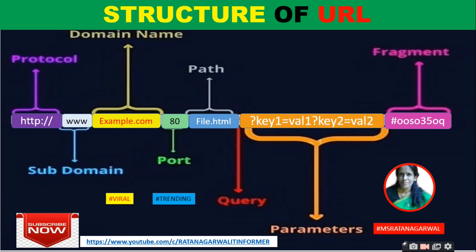www.domain — domain name means if you have a server space for your website. For the domain name, you have to reserve and purchase it. Port 80 is the port number used for the server for your site. Then comes the file name, such as .html.